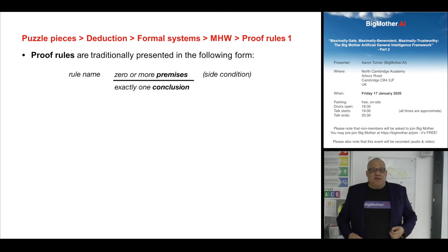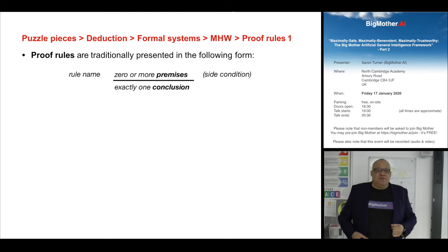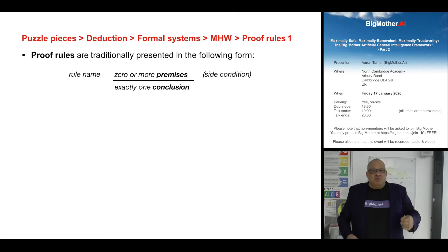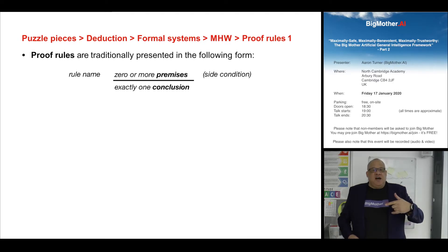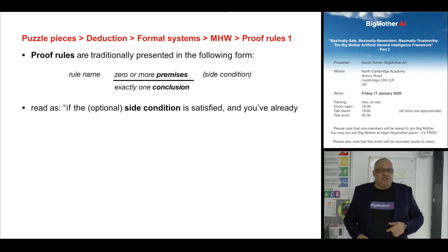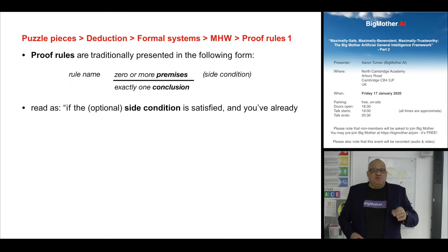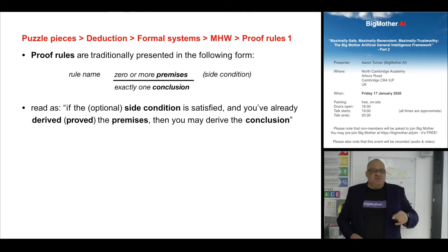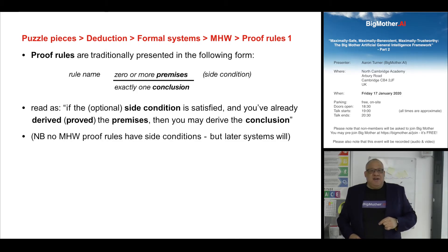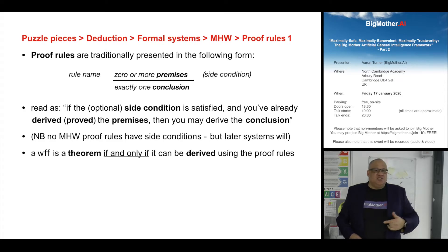Now we describe the proof rules — the symbol shuffling rules for MHW. Rules are normally presented with a name, a line, zero or more premises above the line, and one conclusion below. Sometimes there's a side condition. What it means is: if the optional side condition is satisfied and you've already derived all of the premises, then you can derive the conclusion. MHW doesn't have side conditions, but later systems will.